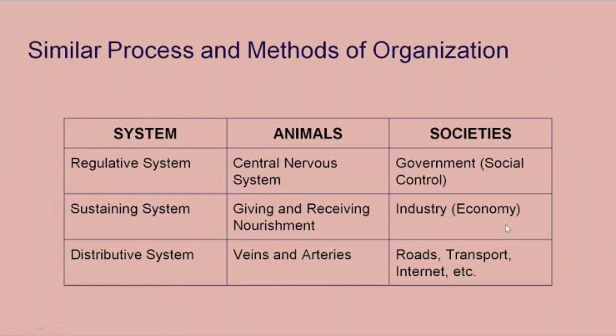The system, animal, and society. Animals have a central nervous system, also known as their brain, which controls and regulates their activities — determining what they do and what they don't do. Now, in society, we have the government. The government detects what you do, detects how you do it, and controls virtually every activity that goes on in the society.